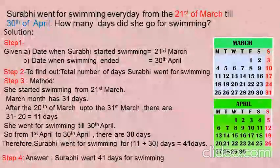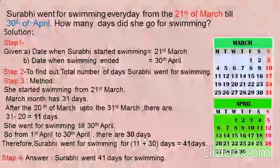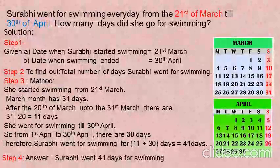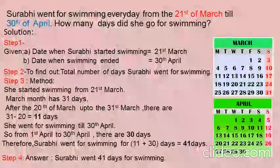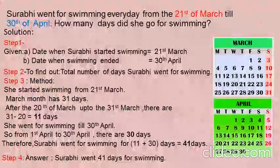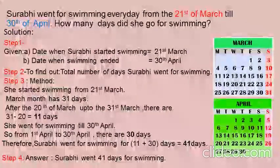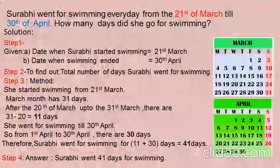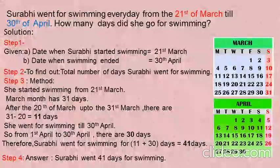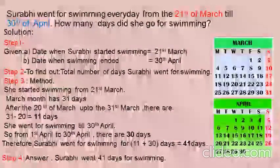Let us study this example. Surabhi went for swimming every day from 21st of March till 30th of April. How many days did she go for swimming? Here you have to calculate the number of days from 21st of March till 30th of April.